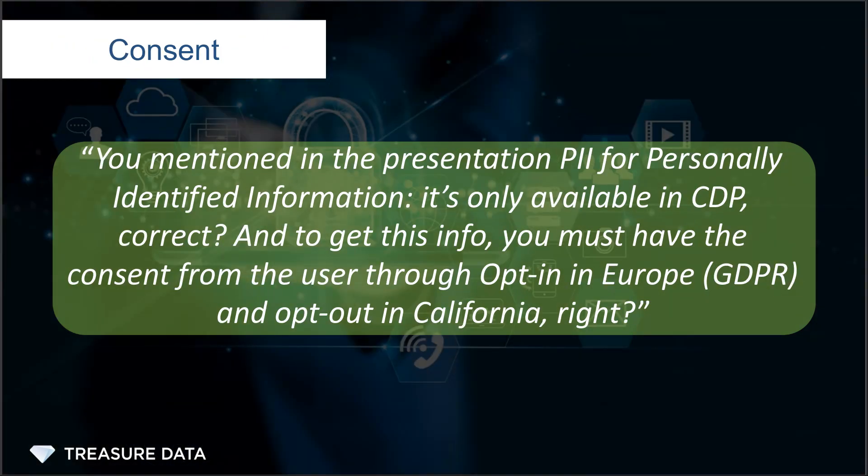You mentioned in the presentation PII — personally identifiable information. It's only available in CDP, correct? And to get this information, you must have consent from the user through opt-in in Europe because of GDPR, and opt-out in California. Is that right?